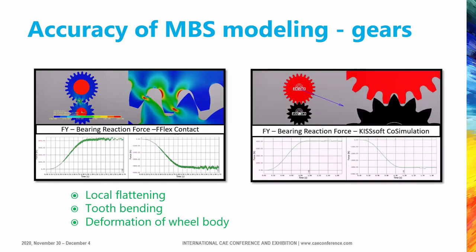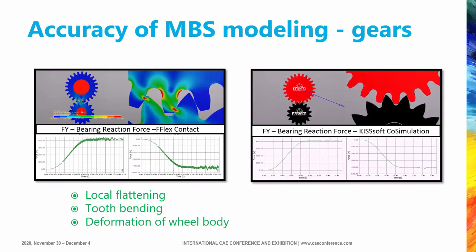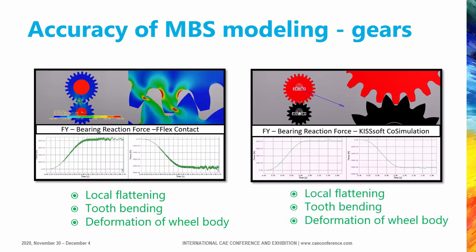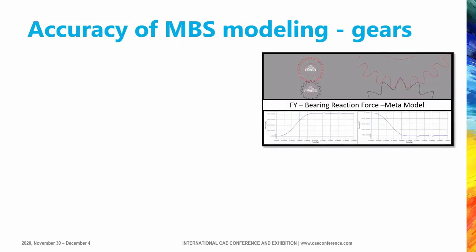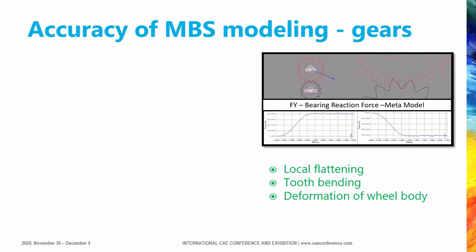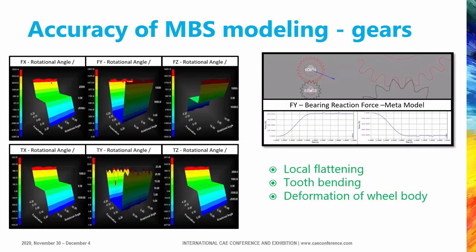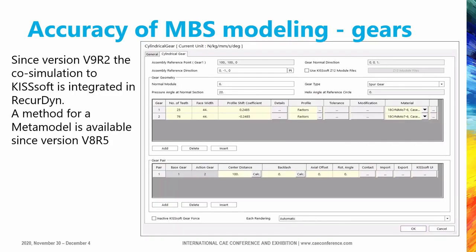Co-simulating with Keysoft confirms the more complex behavior suspected in the finite element model, showing contact shocks across tooth bending while rolling over the line of action. This model covers all wanted effects: local flattening, tooth bending, and gear body deformation. Although co-simulation time is long due to communication overhead, since gears are periodic elements we can use pre-simulation to generate a complex metamodel for use in the main simulation, with identical results. To cover all six degrees of freedom, distance error, axle offset, twist, and tilt can also be added. These simulations are supported from V9R2 and the first metamodels were used from V8R5.